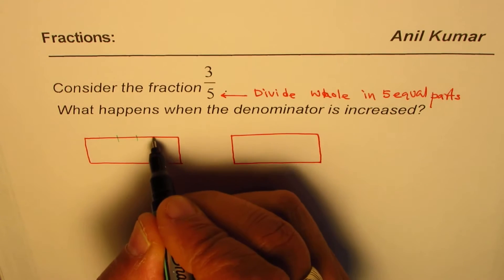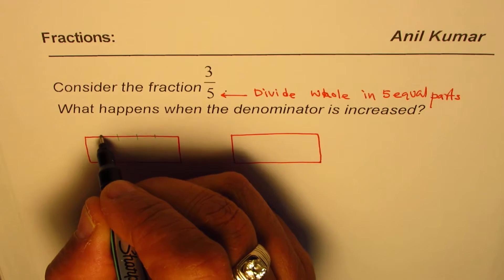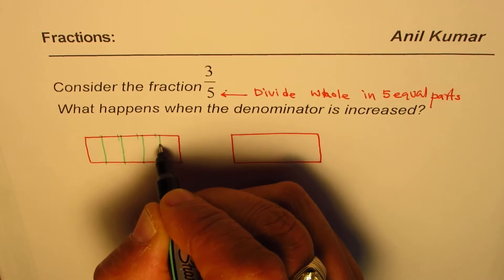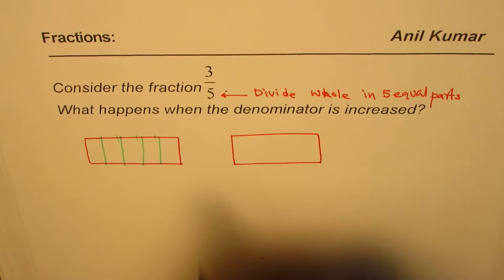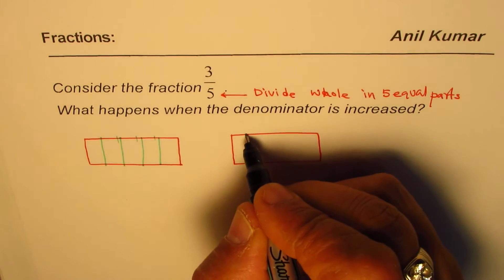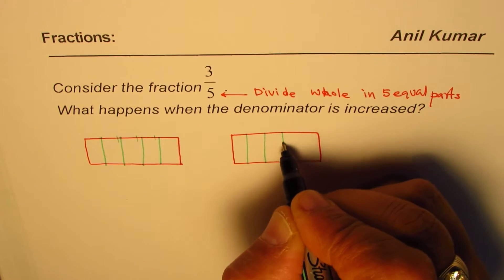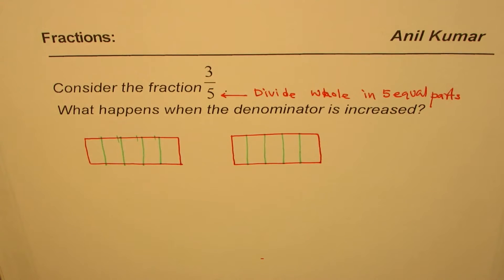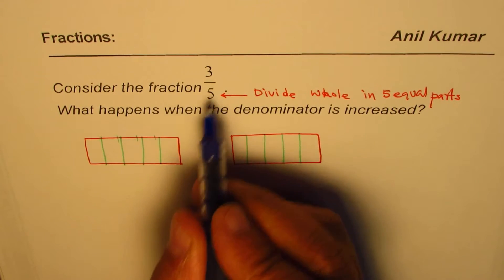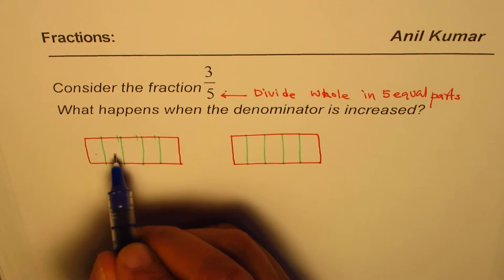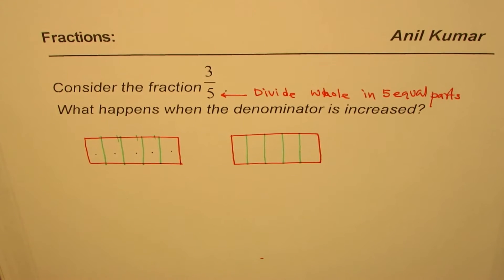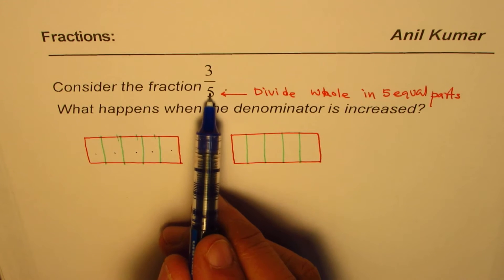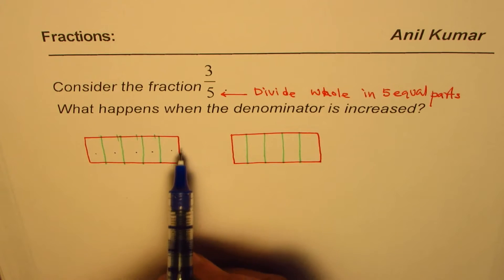Let's divide into 5 equal parts: 1, 2, 3, 4, and 5. We have one part, two parts, three parts, four, and five. Let me do it for this one also — one part, two parts, three parts, four, and five. So the whole has been divided into 5 equal parts.